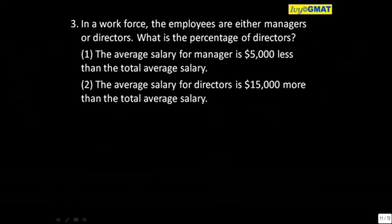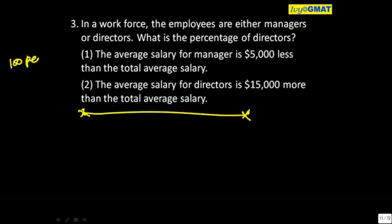What is the answer here? E, right? That's what he said. Okay, let's see. There is one group and there is another group. Let's say there are 100 people overall. We are considering 100 because you have a percentage. Suppose D of them are directors, so 100 minus D of them will become managers.